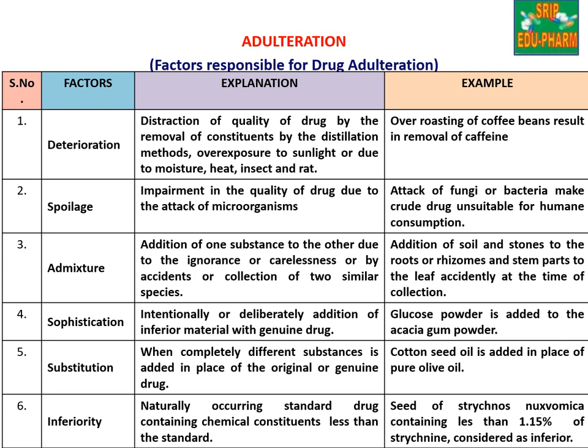These are the factors involved in the process of adulteration. First one is deterioration — destruction of quality of a drug by the removal of a constituent through distillation, overexposure to sunlight, or due to moisture, insects, or rats. For example, if you have coffee beans and over-roast them, that is deterioration.